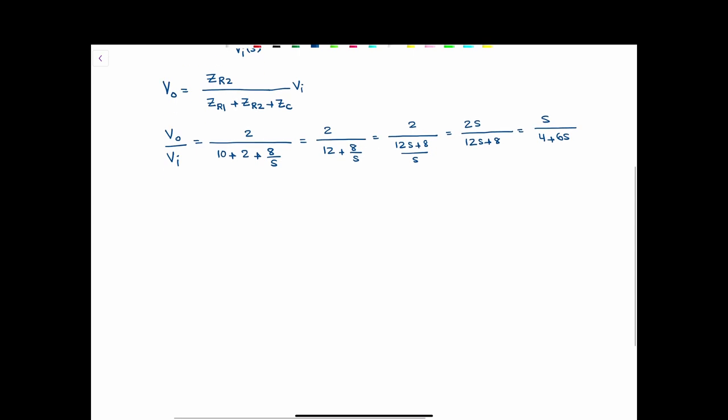If I want to write H of ω, which is the same as the transfer function, I'm going to substitute S with jω. So that's jω over 4 plus 6jω. So that is the transfer function of this circuit.